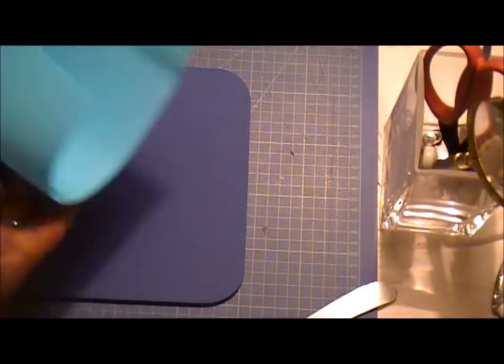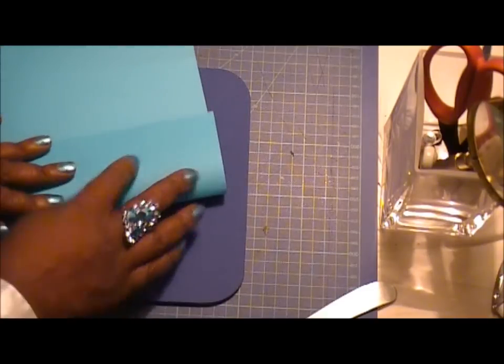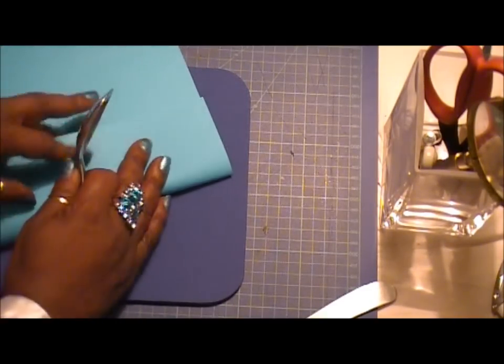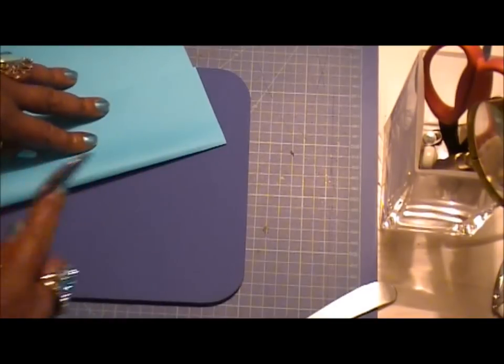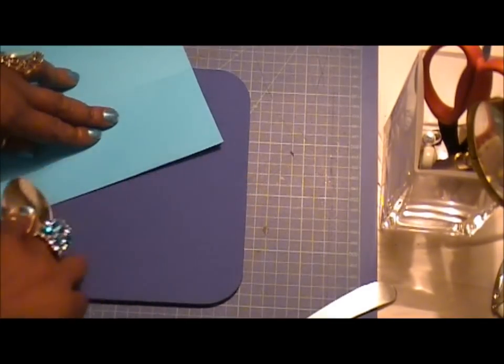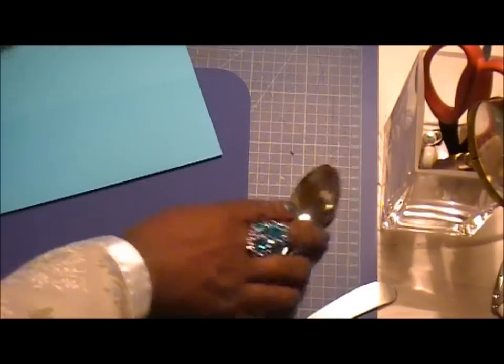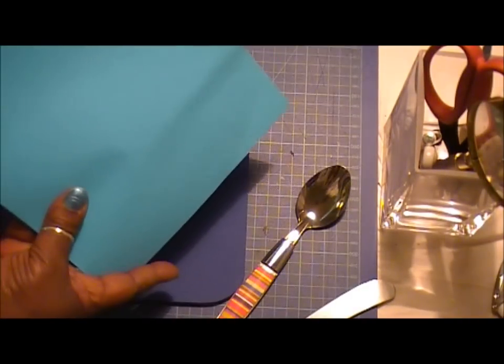Fold your paper and instead of a bone folder, you can use the back of the spoon and you will get a beautiful crease line.